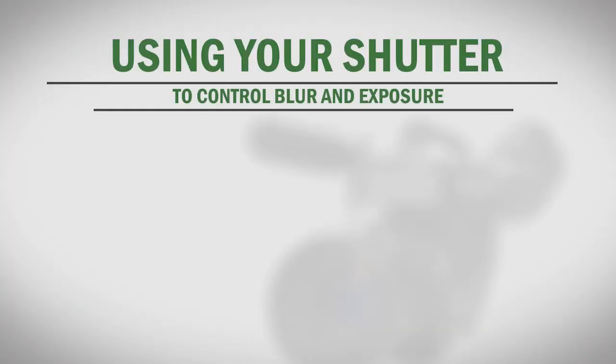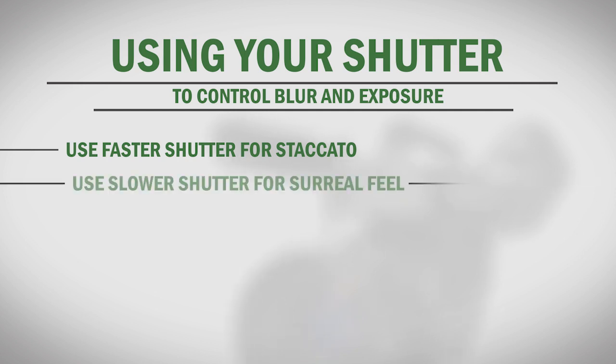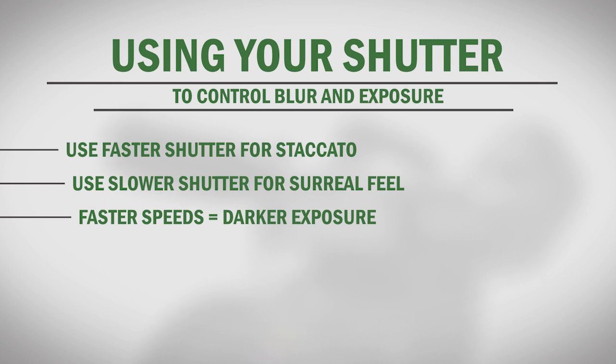The primary reason to adjust your shutter speed is to achieve the type of motion blur you want in your project. Fast action scenes will often use a faster shutter speed to give a staccato feeling to the footage, while scenes shot with slower shutters can enhance a dreamlike, surreal feel. The second thing your shutter angle or speed will affect is your exposure. Faster shutter speeds will leave your shutter open for a shorter amount of time, allowing less light to hit each frame, which creates a darker exposure.